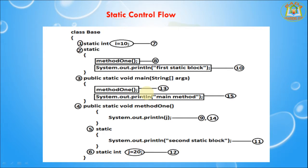In this program, the compiler first identifies the static members from top to bottom. Next, execution of the static variable assignments and static blocks from top to bottom. Third step, execution of the main method. Finally it executes the main method. Whenever we are executing this program the output is like this.